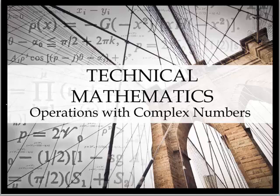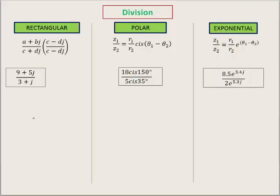So are you ready to get started? Let's start with division. In this video we're going to go through all three formats: rectangular format, which you remember was a plus bj; the polar format, which was r cis theta; and the exponential format, which was r e to the theta j. And that theta was in radians.